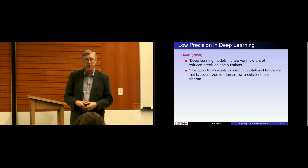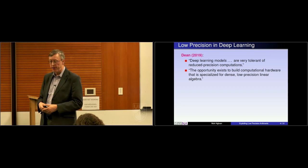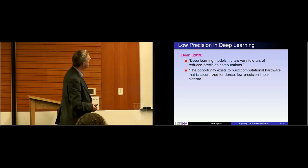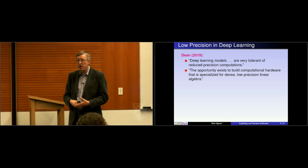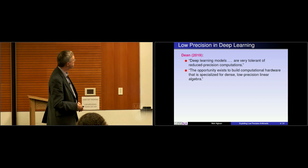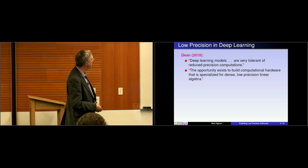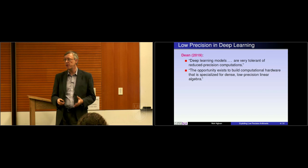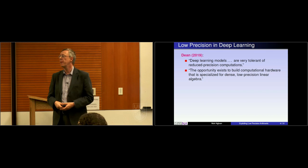I'm quoting here from a recent paper by Jeffrey Dean from Google. He said: deep learning models are very tolerant of reduced precision computations. If you look on the archive, you'll find many papers in machine learning where they're trying out training in low precision and finding that it still works okay. I also like his comment that the opportunity exists to build computational hardware that is specialized for dense low precision linear algebra — and these low precision linear algebra kernels are really key here.